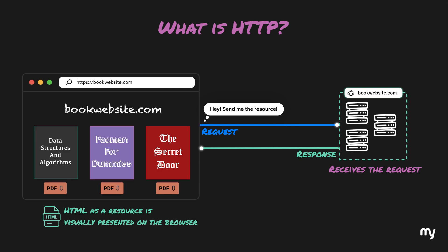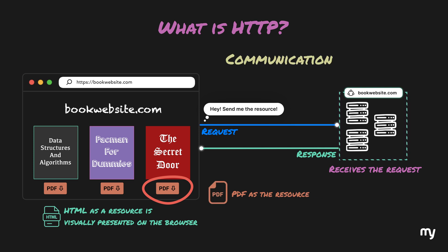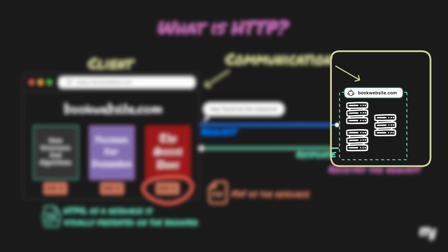Similarly, when you click on a link to download a PDF, you will receive the PDF as the resource. So we can clearly see that there is some sort of communication between the two systems by which they can exchange data. Typically, the system which requests the data is called the client and the system which processes the request and sends back the response is called the server.